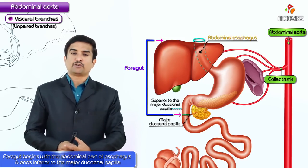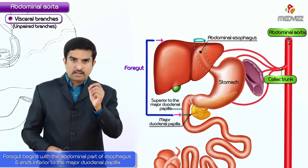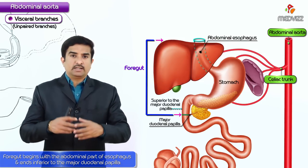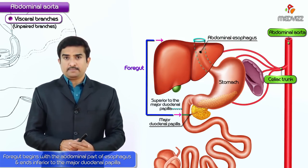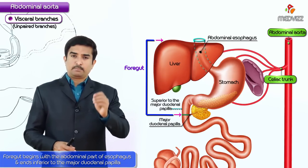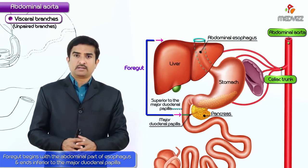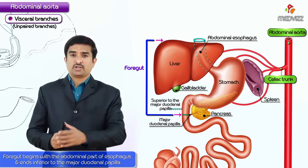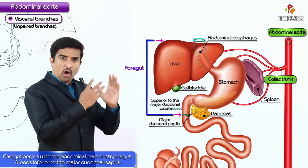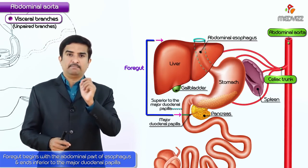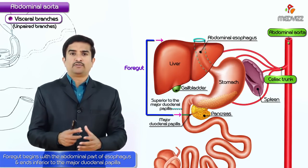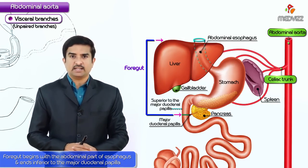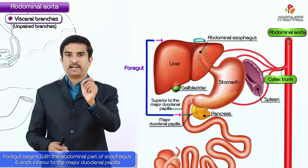The structures of the foregut include the abdominal part of the esophagus, stomach, duodenum superior to the major duodenal papilla, liver, pancreas, gallbladder, and spleen — which also develops in relation to the foregut region. All these structures are supplied by the branches of the celiac trunk, so we can say: the foregut is supplied by the celiac trunk.